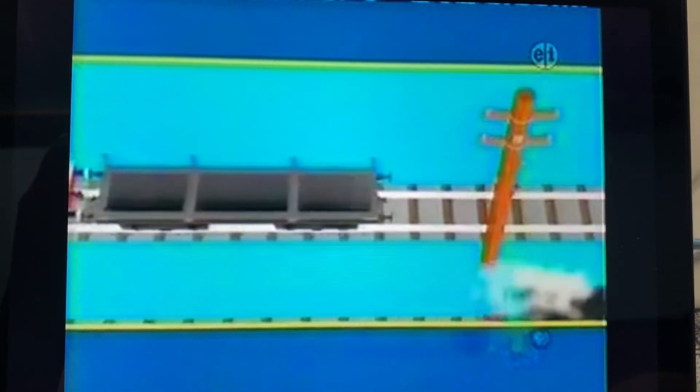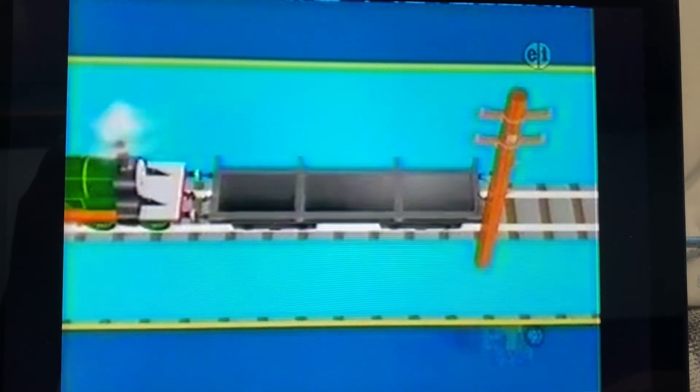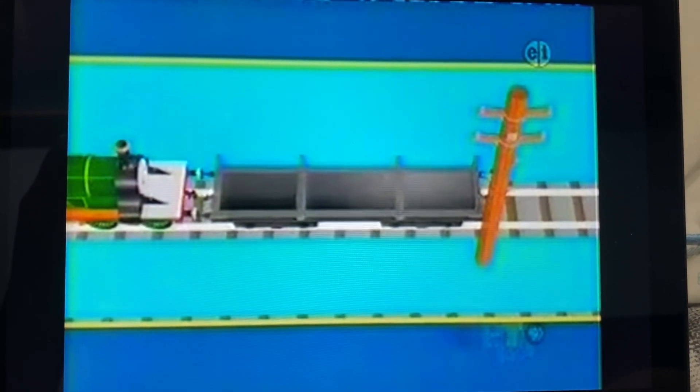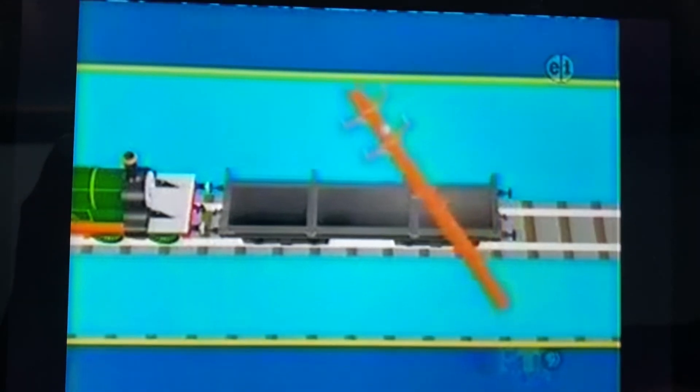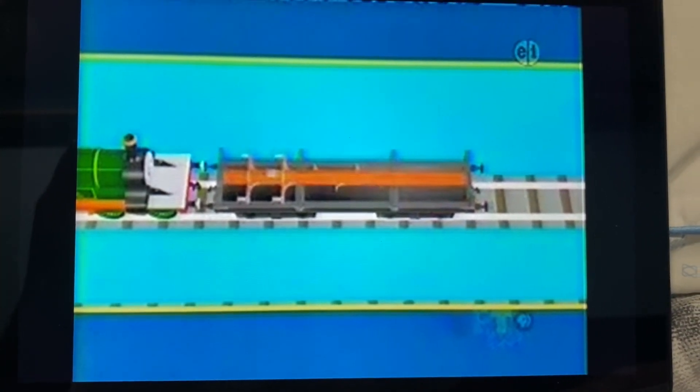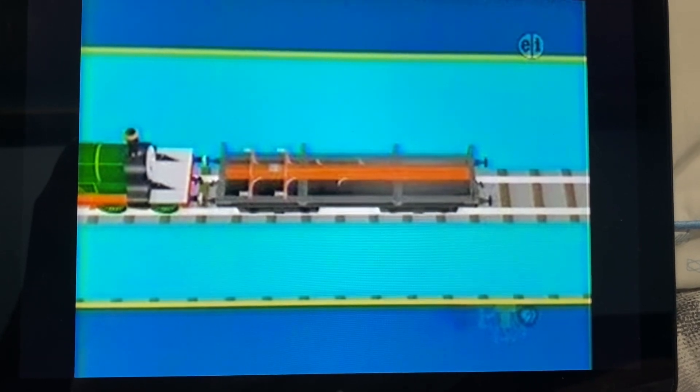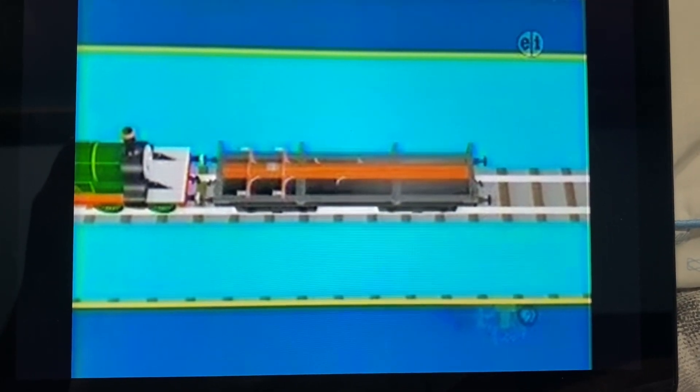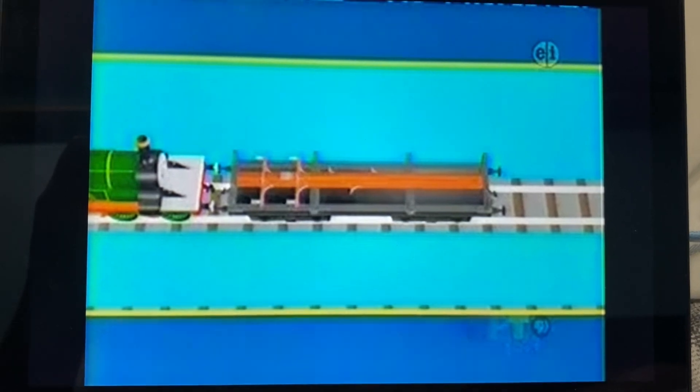Now, only Emily is left. Is her flatbed the right size to take the telegraph pole to the docks? Yes, Emily's flatbed is not too big and not too small. It is exactly the right size to take the telegraph pole.